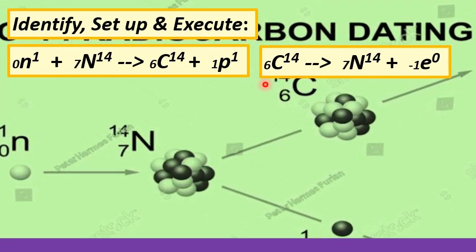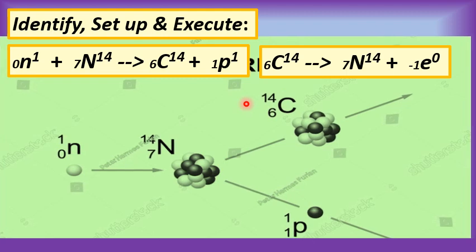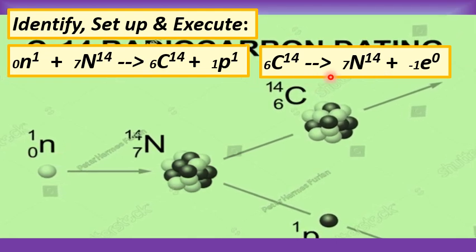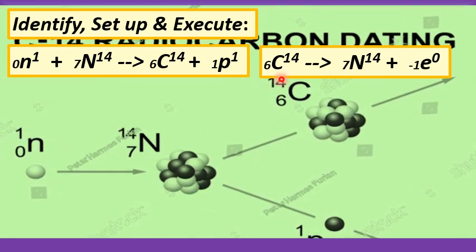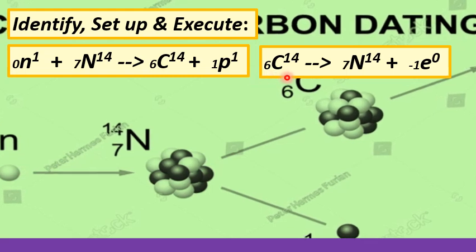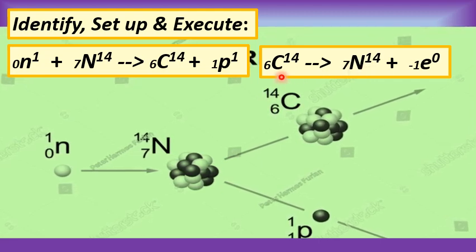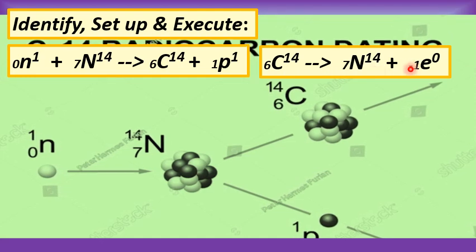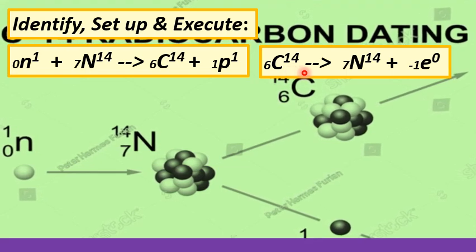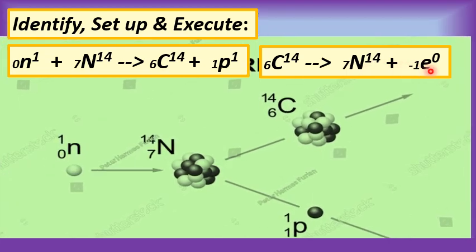The next nuclear equation involved is when the organism died. It stopped taking in carbon-14, so the radioactive carbon-14 that has been absorbed by the organism when it was still living starts to undergo a beta minus decay. Carbon-14 starts to decay into nitrogen-14 by the emission of a beta minus particle.